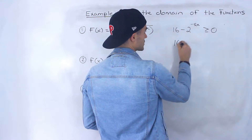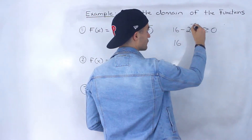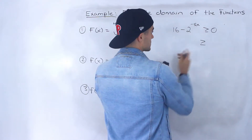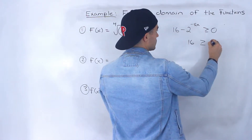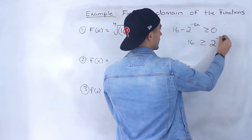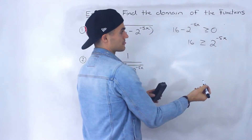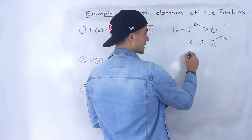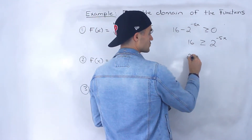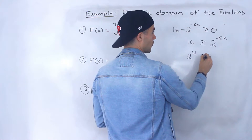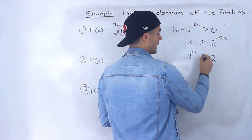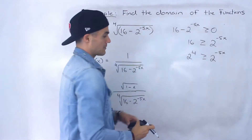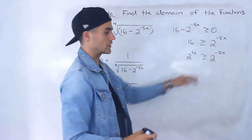What I'm going to do is bring the negative 2 to the negative 5x to the other side. We'll end up with 2 to the power of negative 5x on one side. Notice we can get a common base here — this 16 we can rewrite as 2 to the power of 4. That has to be greater than or equal to 2 to the negative 5x. Because we have the same base, we can drop the base.